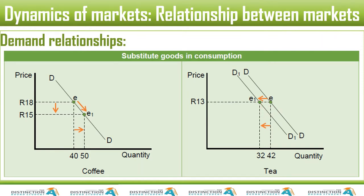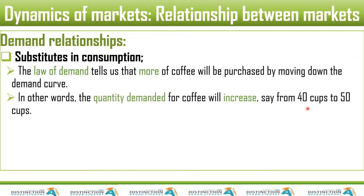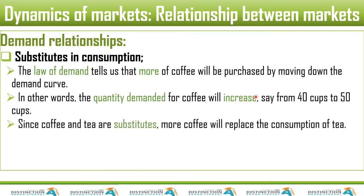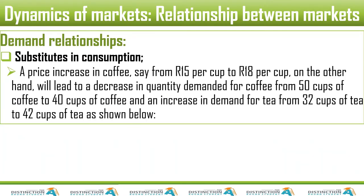So the next few slides explain the same thing — you can pause and read them, as they are simply explaining the same graph. The price of tea stayed the same. So it's obvious that if we take a case where coffee is going to go up, a different scenario will happen. Let's move on to the next scenario.